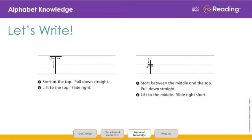Now let's practice the lowercase T. Start between the middle and the top, pull straight down, lift to the middle, slide right short. Come on, let's try it again. Start between the middle and the top, pull straight down, lift to the middle, slide right short. You try on your own. Awesome job.